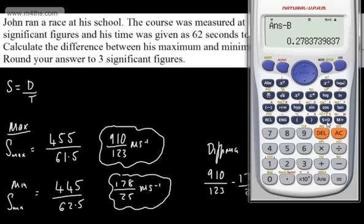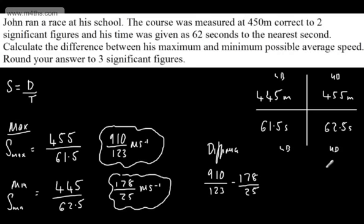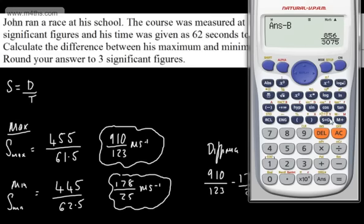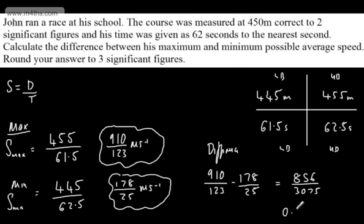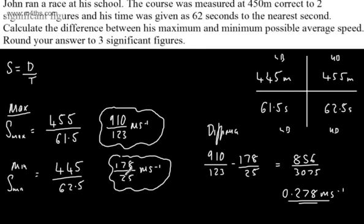In the exam, I'd write this as a fraction: 856 over 3075. Rounding to three significant figures, that's 0.278 meters per second. This is the difference between the maximum possible speed he could have run and the minimum possible speed.